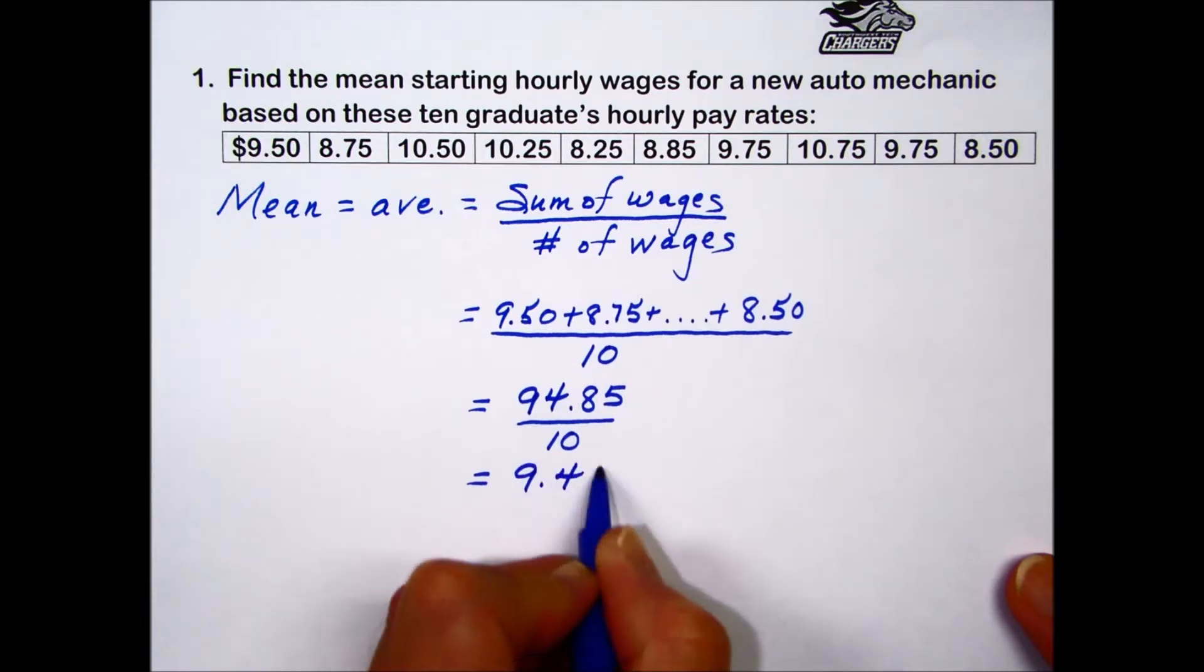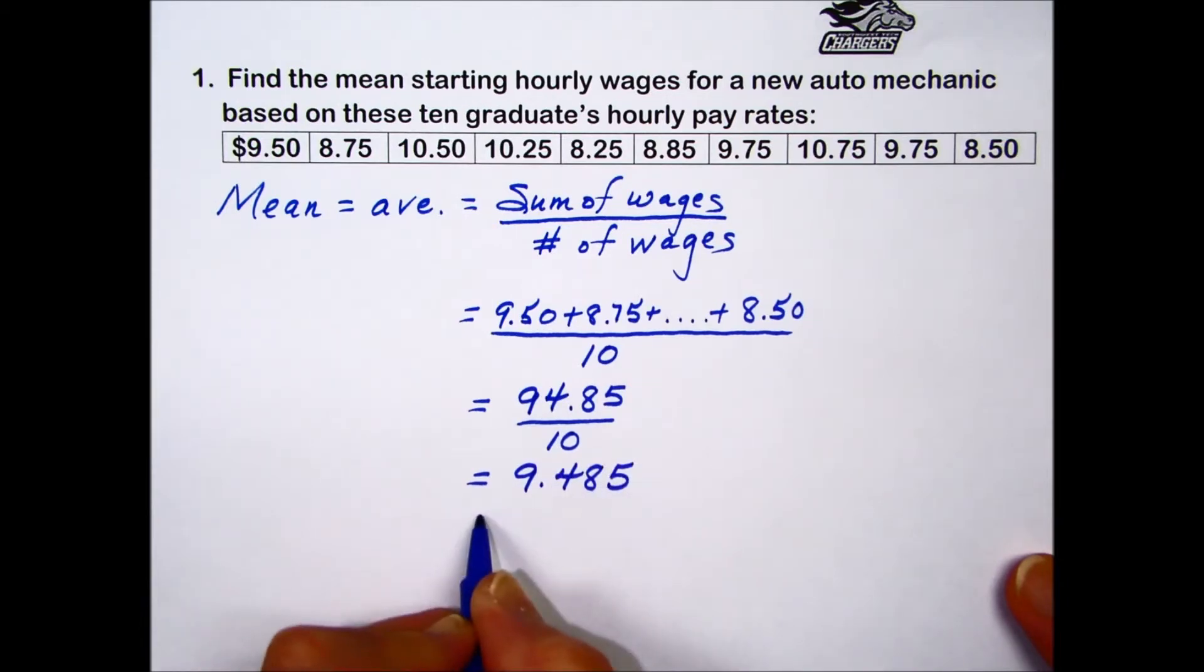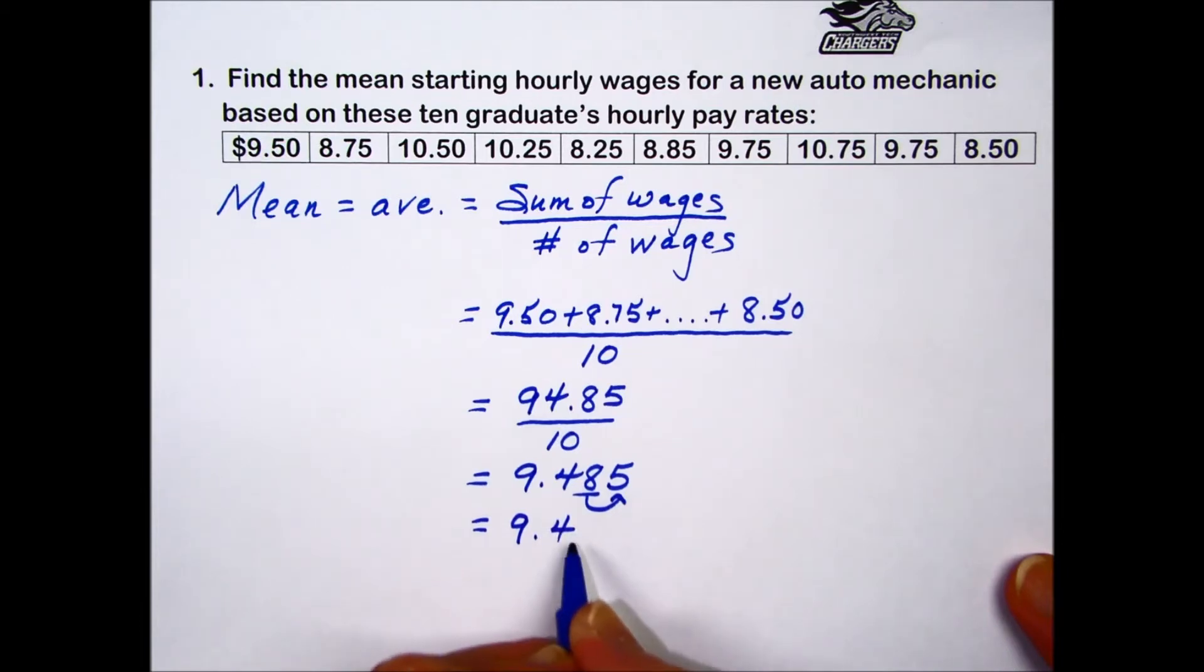Because this is money, we'll round it to the nearest cent, or second decimal place, so we're going to call our mean hourly wage $9.49.